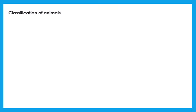In the previous class, we studied the 5 criteria used for the new system of animal classification. This flow chart gives the classification of animals as per those criteria. Girls, draw this flow chart in your notebook and learn it. Let us study the characters of each phylum in more detail.